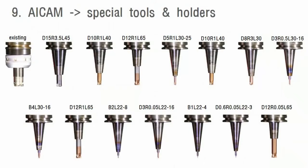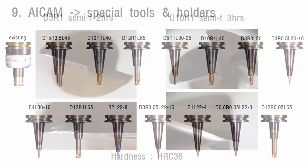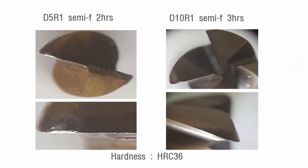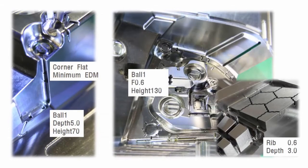AI CAM increases the lifespan and machining speed with 10 types of specially designed tools and shrink-fit holders. About 80% of the tools are bull-nose tools, and some of the tools for finished machining can also be used in semi-finished operation to save cost. It can be used for stable machining in deep spaces and minimizes electrode use. These are bull-nose tools after semi-finishing — they guarantee faster machining and longer lifespan. AI CAM machines every difficult area, especially ribs with clearance of 0.6, so that less EDM machining operation will be required.